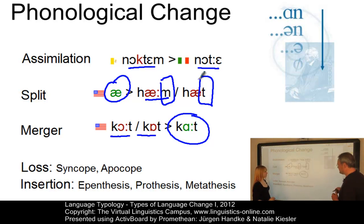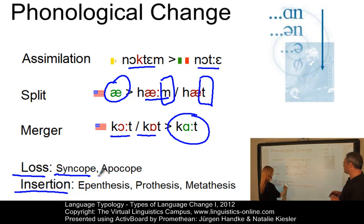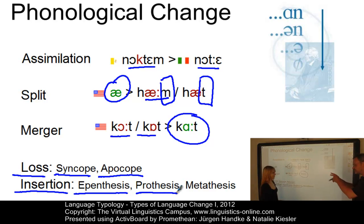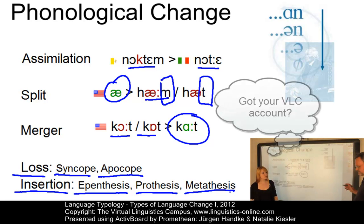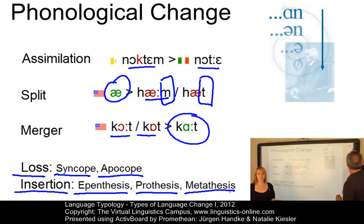The remaining phonological changes are primarily losses and insertions. If you lose something in the middle of a word, you call it syncope. If you lose something at the end, you call it apocope. If you insert something in the middle of a word, you label it epenthesis. The insertion of something at the beginning is called prothesis. And if two phonemes change their place, you call it metathesis. If you want to learn more about phonological changes, you could consult the VLC glossary or load the virtual session 'Principles of Language Change'. Let us now continue with the morphological changes.